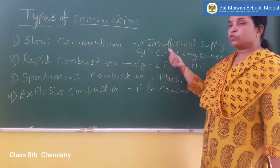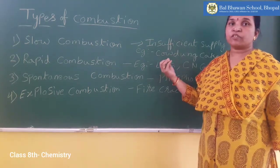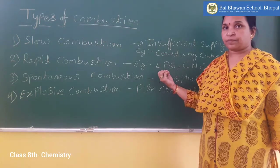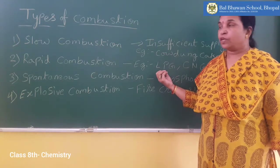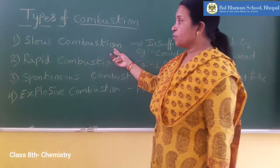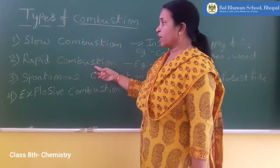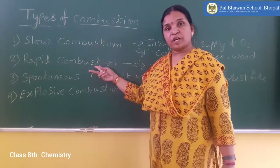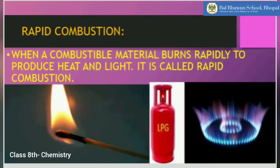Compared to slow combustion, the pollutants released in rapid combustion are less. The definition of rapid combustion: when a combustible material burns rapidly to produce heat and light, it is called rapid combustion.